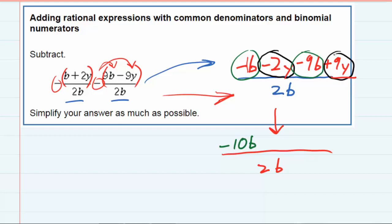I also have minus 2y and plus 9y, which combine to plus 7y. After distributing the negatives and combining like terms while keeping the common denominator, we get our solution of negative 10b plus 7y over 2b, which has already been simplified as much as possible.